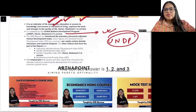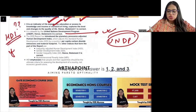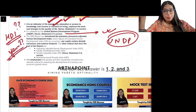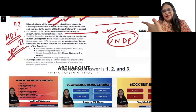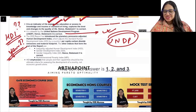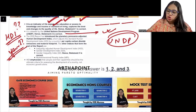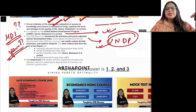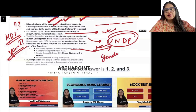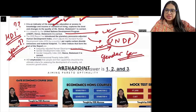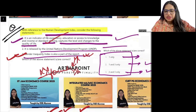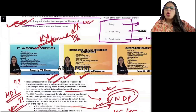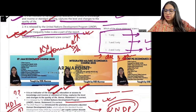Homework question: who developed the Human Development Index and in which year? It is a three-word name of an economist from Asia. Regarding the report: UNDP publishes it, and in the same report they also publish the Gender Development Index and the Gender Inequality Index. So Gender Inequality Index is indeed part of the report — not part of the formula of HDI, but part of the published report.